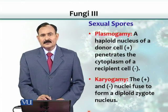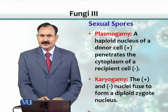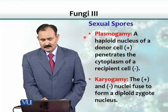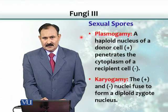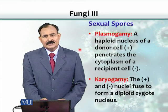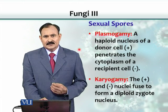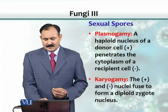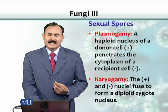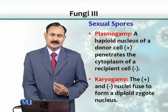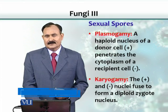Sexual spores are produced in three phases. The first phase is called plasmagamy, where a haploid nucleus of a donor cell, which is called positive or plus, penetrates the cytoplasm of a recipient cell, which is called a negative or minus cell.